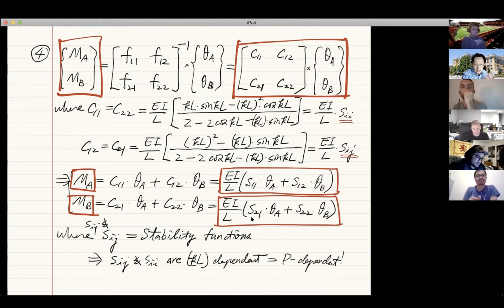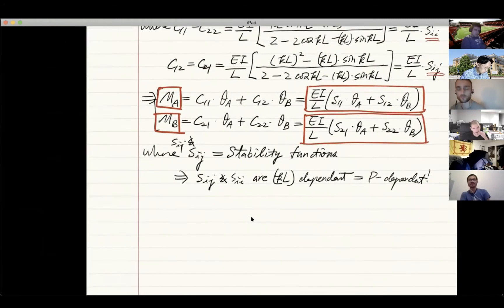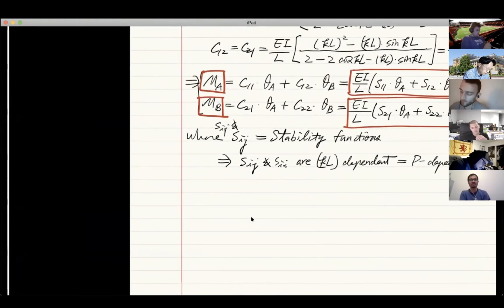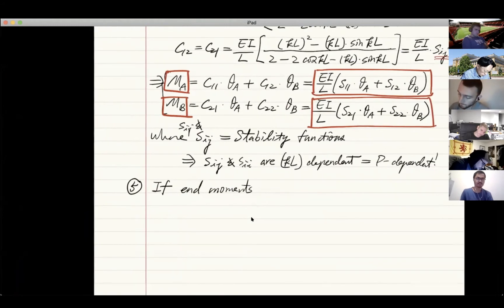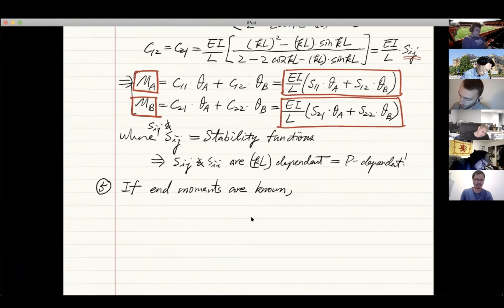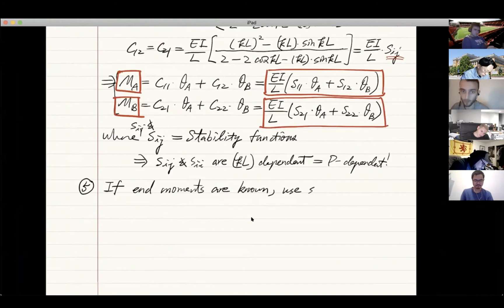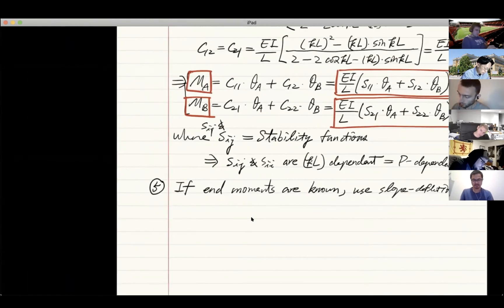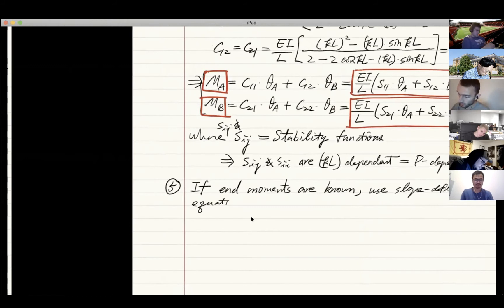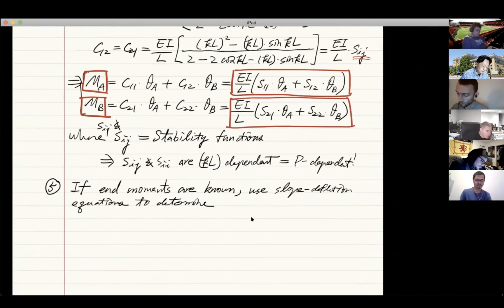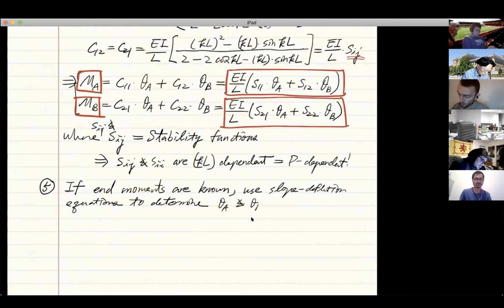If you know the end moments, this will be step five. If end moments are known, use the expression, use the slope deflection equations to determine theta A and theta B.